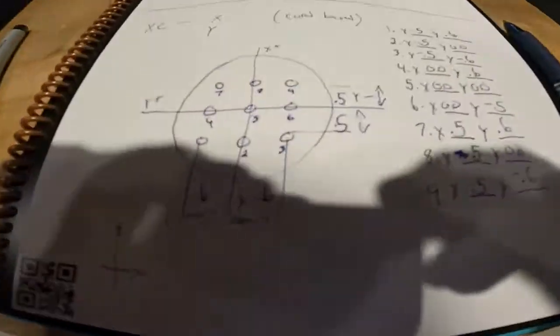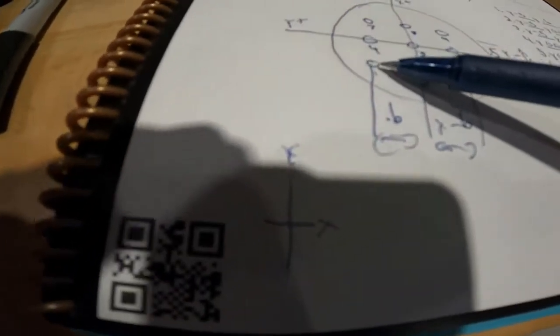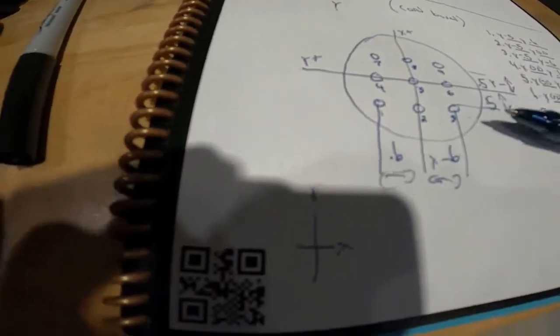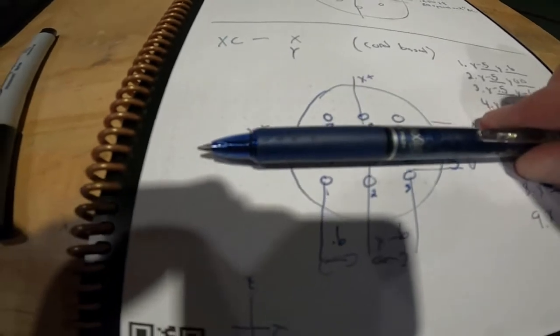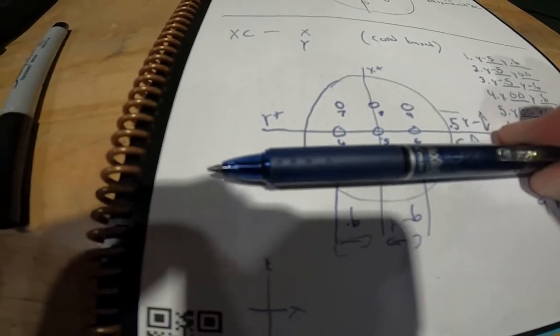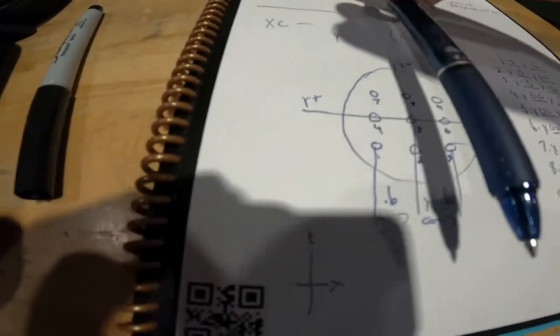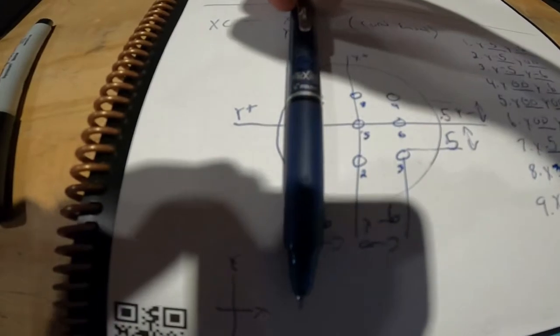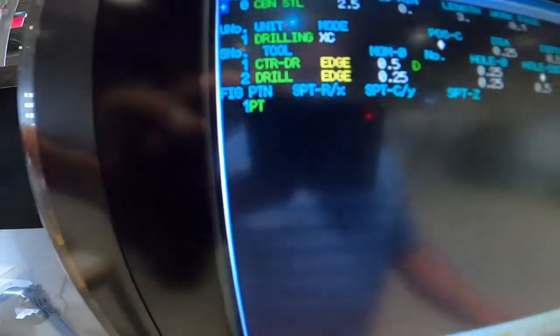We're going to come down to our print and we're looking at hole number one. Remember we calculated that as X negative 0.5 and Y positive 0.6. So we're going to go X negative 0.5 and Y axis 0.6. Notice how they're yellow — yellow means X and Y. Start point Z is going to be zero — we're going to start drilling at zero — and our return is going to be return position one.